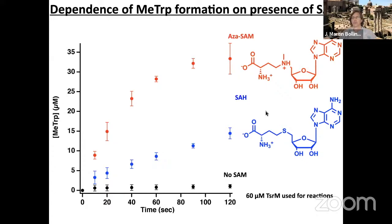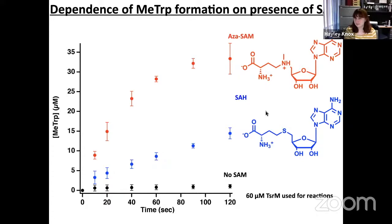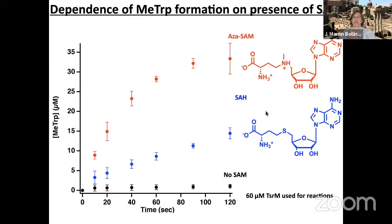SAM has to be bound along with tryptophan when the methylation occurs. It's unclear why SAH alone cannot support this — it may be electrostatic. SAH works, but SAM with its positive charge is better. Perhaps if there isn't enough SAM to replace SAH, you can still do the second step with SAH bound, but it's just less efficient.